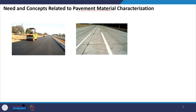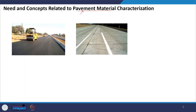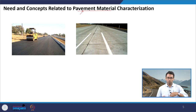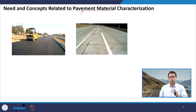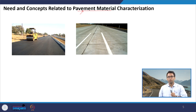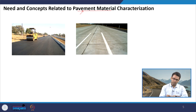Let us begin by understanding the term pavement material. When you see the term pavement material, the predominant word here is pavement — we are learning about materials that are used in pavement. To get a feel about this subject, let us look at the two basic types of pavements typically used in construction. We have a flexible pavement and a rigid pavement — these are the general terminologies.